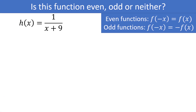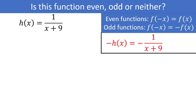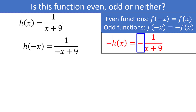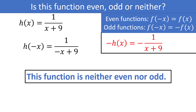Let's try one more: h of x is equal to 1 over x plus 9. Negative h of x is negative 1 over x plus 9. Now h of negative x is 1 divided by negative x plus 9. It looks close to negative h of x, but they are not exactly the same — a negative out front is not the same as having a negative only on the x in the denominator. The function is clearly not even either. Therefore this function is neither even nor odd.